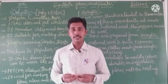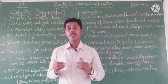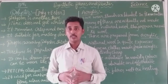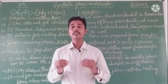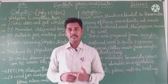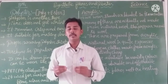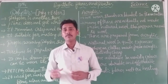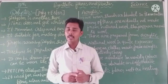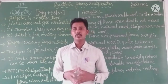We know that different fabrics are made from fibers. Fibers are obtained from two sources: natural sources and artificial sources. Natural sources occur in nature — like cotton, jute, wool, and silk. Artificial sources are not found in nature; these are man-made from chemical substances, like rayon, nylon, polyester, and acrylic.